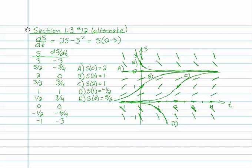Let's do a quick sample problem like problem number 12 in section 1.3, sketching the slope field without technology and then drawing some sample solutions. Let's take a problem ds/dt equals 2s minus s squared. We can factor that and write s times 2 minus s.